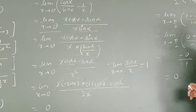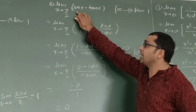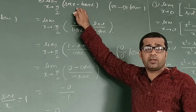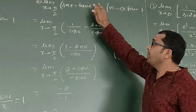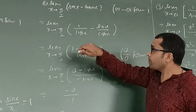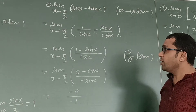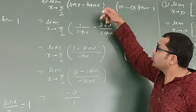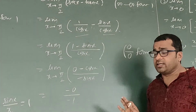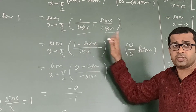The next question is again an infinity minus infinity form: limit x → π/2 of (sec x − tan x). sec(π/2) = 1/cos(π/2) = 1/0 = infinity, and tan(π/2) is also infinity. So it is infinity minus infinity. We simplify: sec x = 1/cos x and tan x = sin x / cos x. Putting x = π/2: cos(π/2) = 0, sin(π/2) = 1, giving (1 − 1)/0 = 0/0 form.